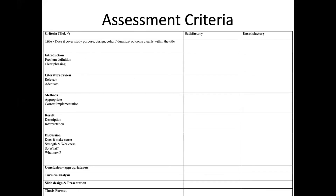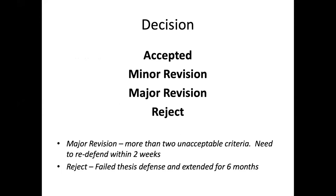If you're able to defend your findings — even if the results don't make sense, or you didn't have enough sample size, or you could only conduct half a study — as long as you can defend those findings well enough, I'm willing to accept it. There are only four types of decisions: the presentation was accepted, there is a minor revision supervised by your supervisor, there may be a major revision requiring you to come back and present again in four to six weeks, or it could be rejected, which means a failed thesis and a six-month extension.